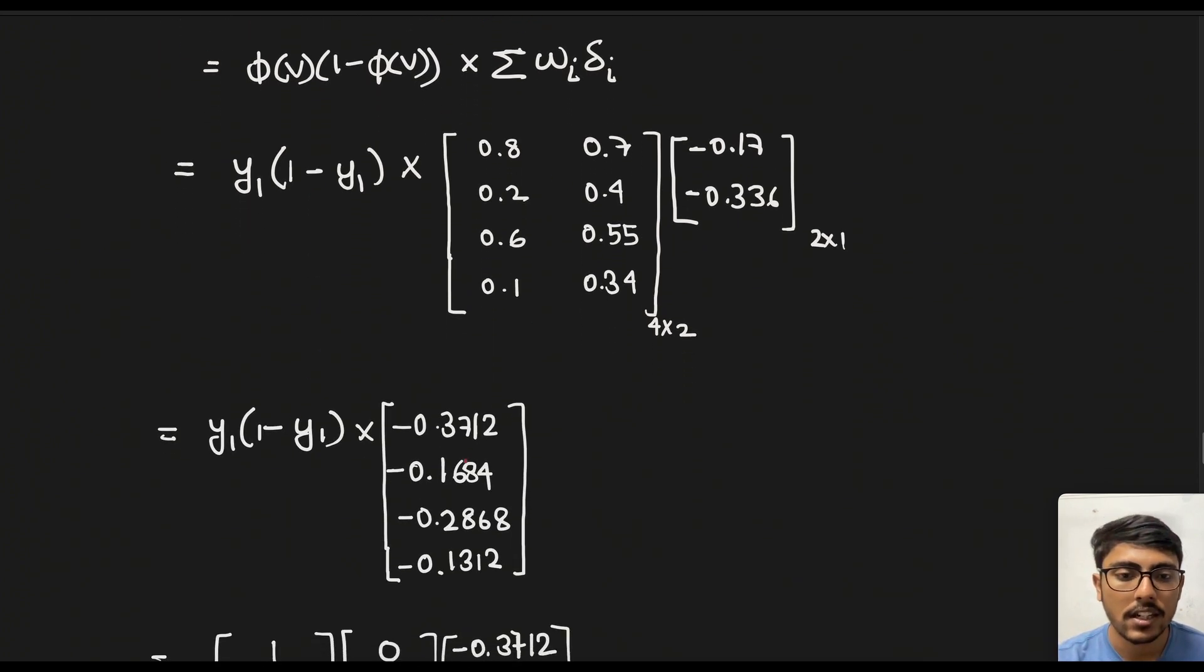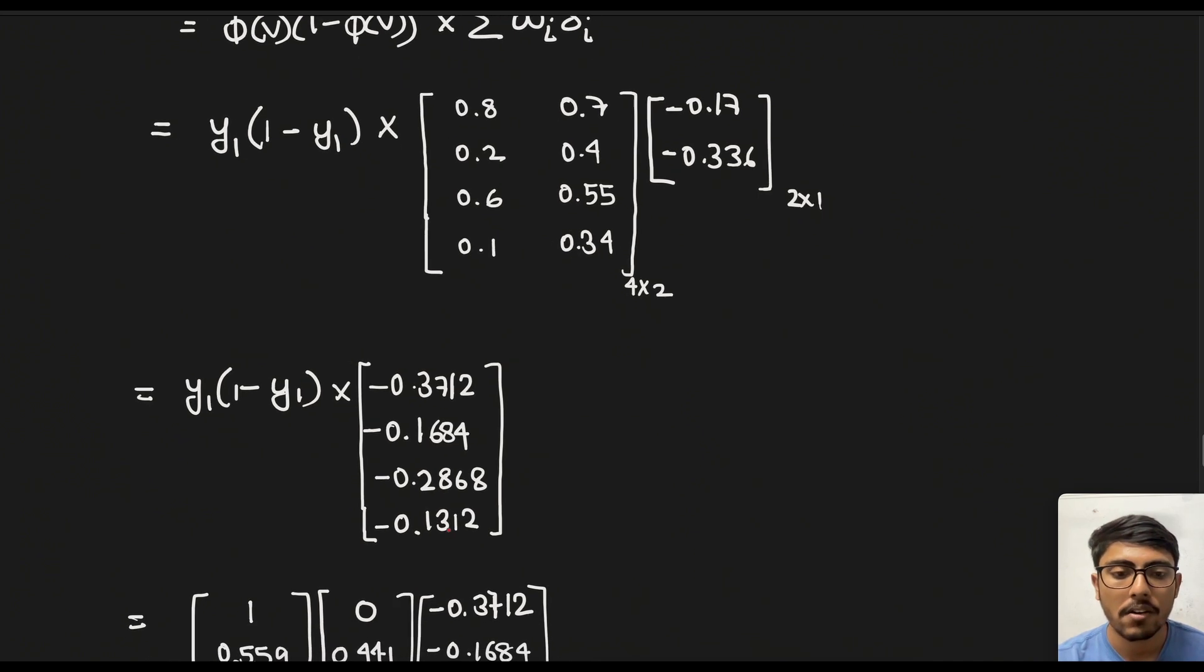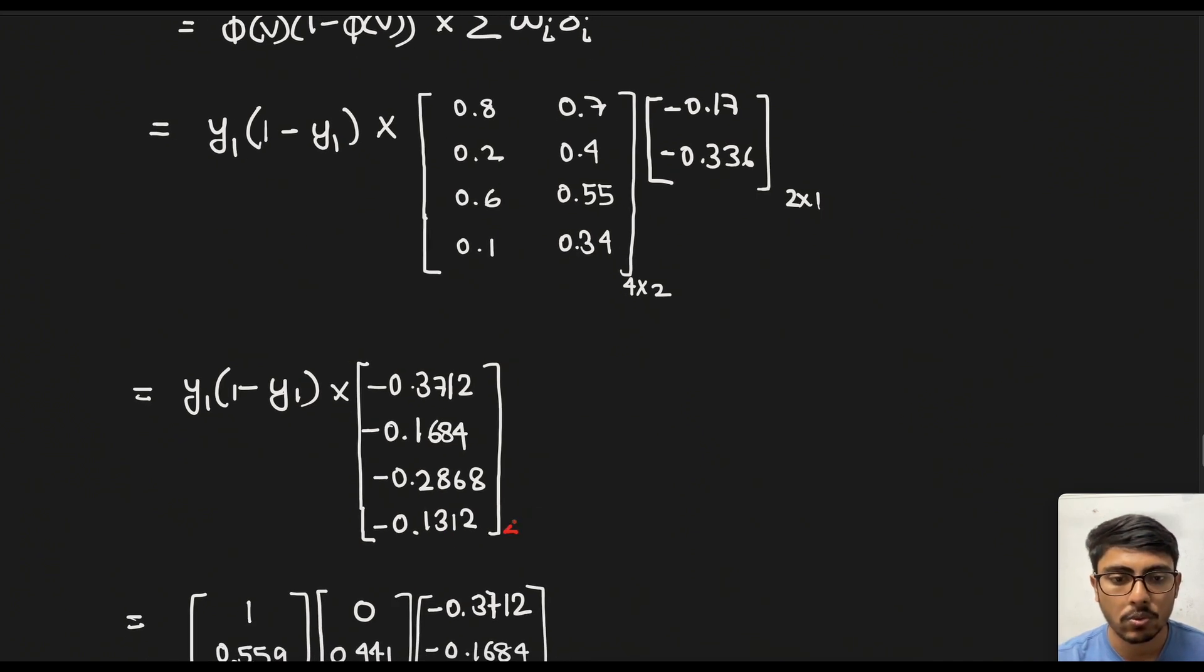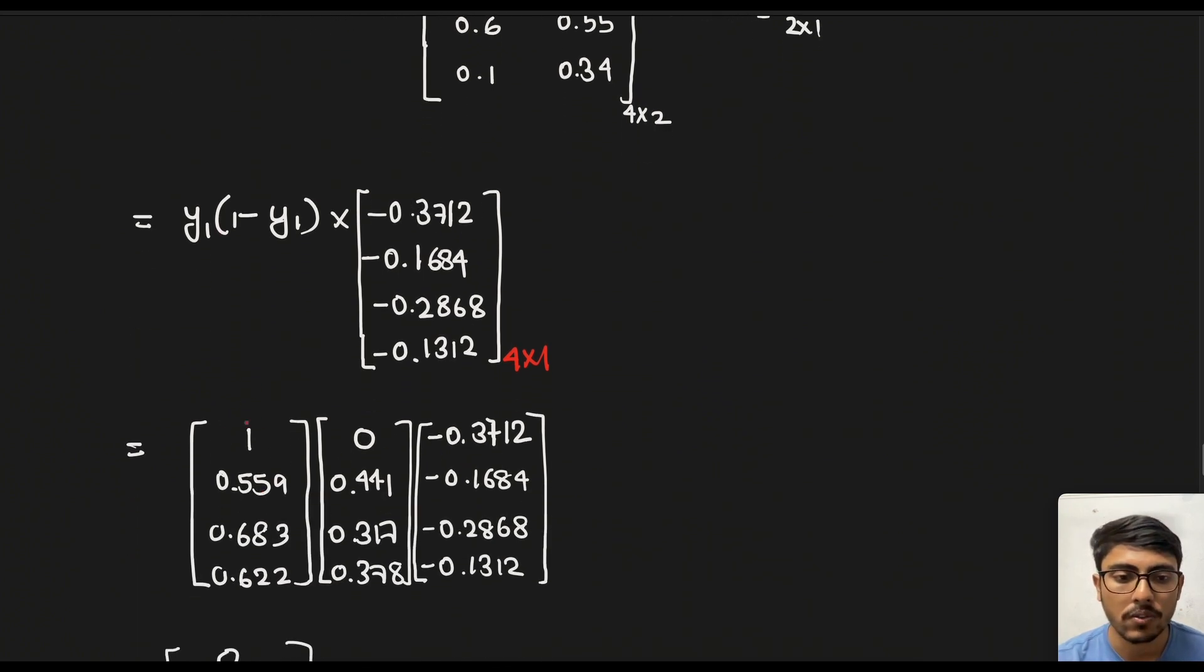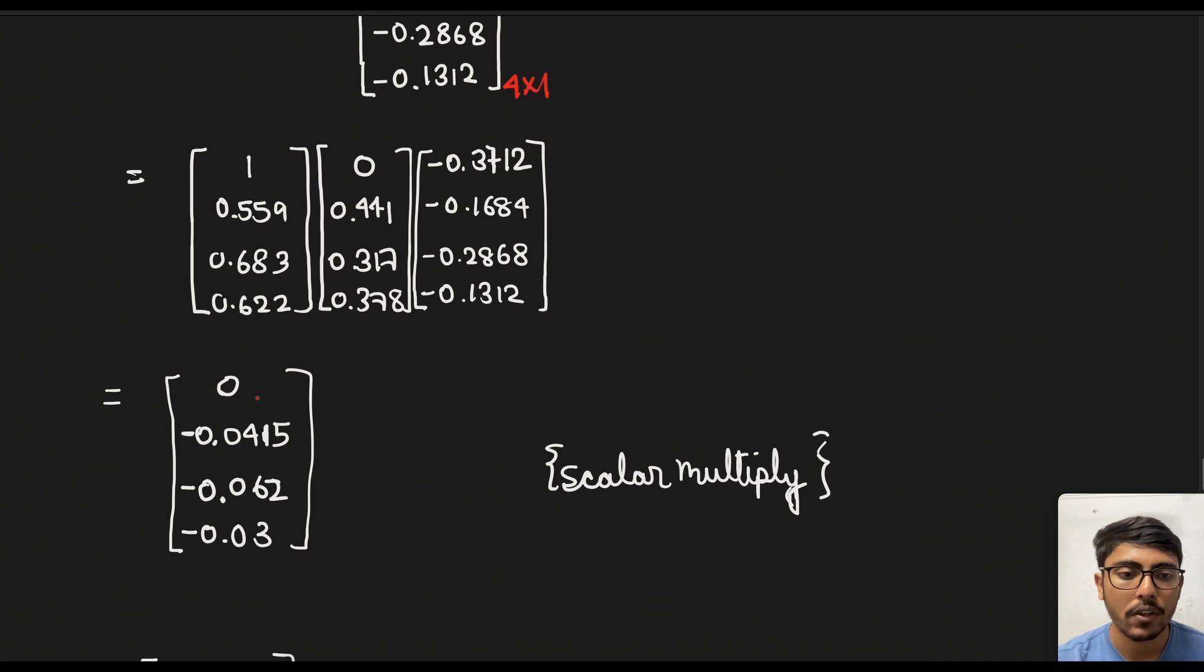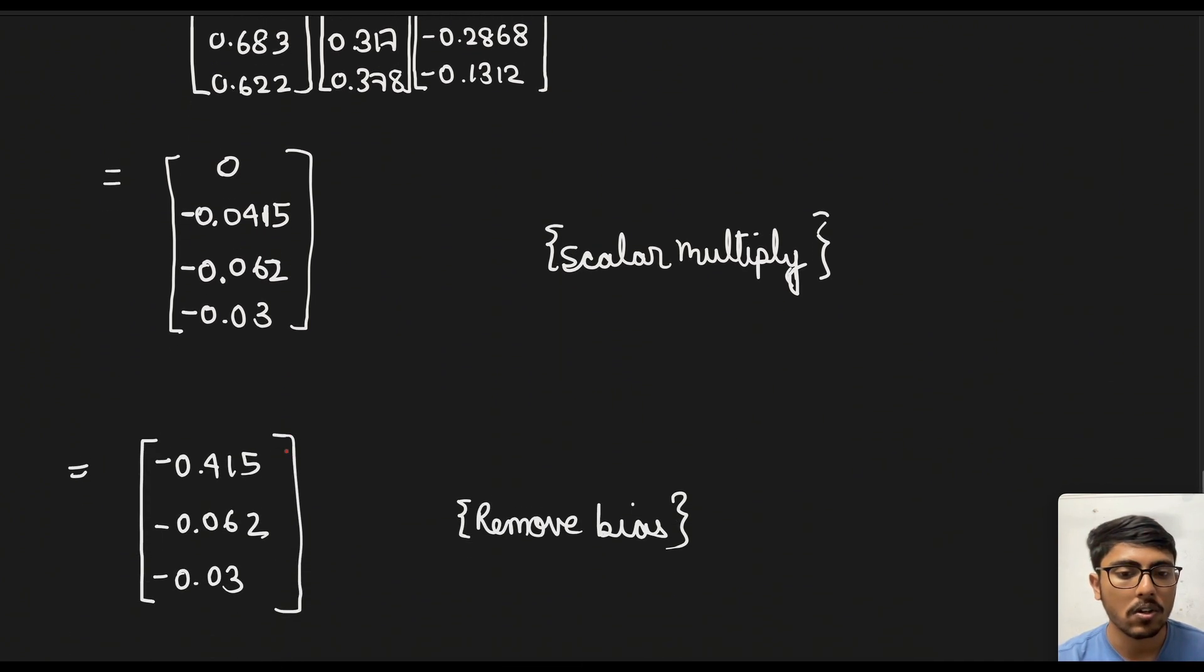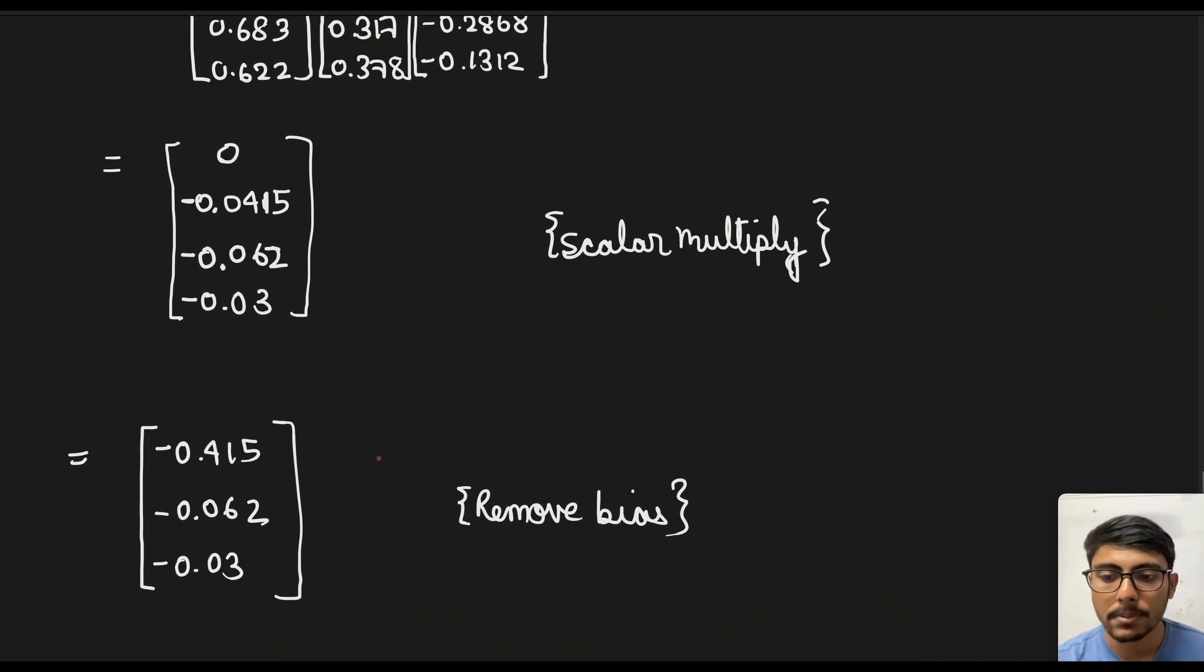If we now calculate this after the multiplication or matrix multiplication we get this matrix which is 4 × 1 and y1 is already 4 × 1. So we just simply multiply all these three scalarily. Again we get this. Now we will have to remove the bias because local gradients will have to remove the bias associated for the hidden layers.